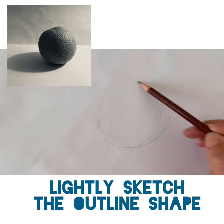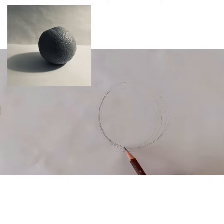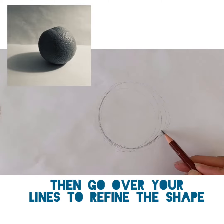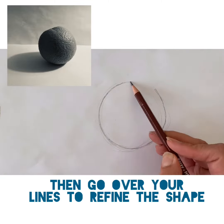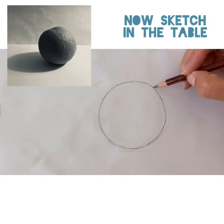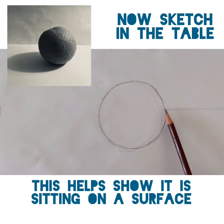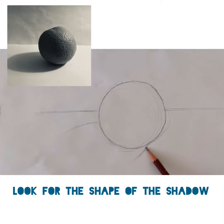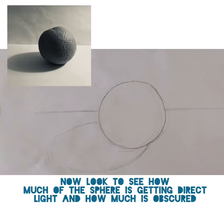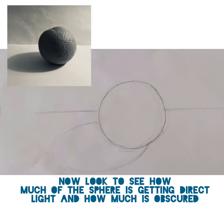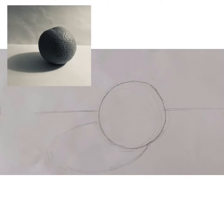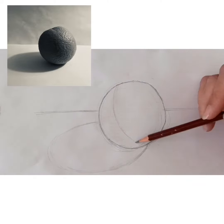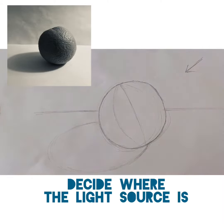Start off by outlining the shape of the object. Then go over your light outline and refine the shape to make it more accurate. Next, sketch in the table line — this helps to show that it's sitting on something. Lightly sketch the shape of the shadow, and look to see how much of the sphere is getting direct light and how much is obscured by the sphere itself.